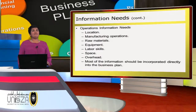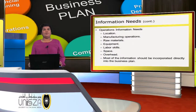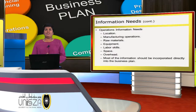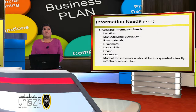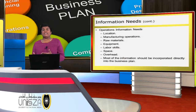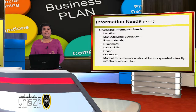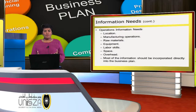Regarding operational information needs, the entrepreneur needs to identify the location and know the manufacturing operation practices. What are the raw materials involved? What type of equipment is needed — more specifically for an agricultural entrepreneur? Of course, labor is needed, meaning skilled labor, along with space and overhead. Most of this information should be incorporated directly into the business plan.